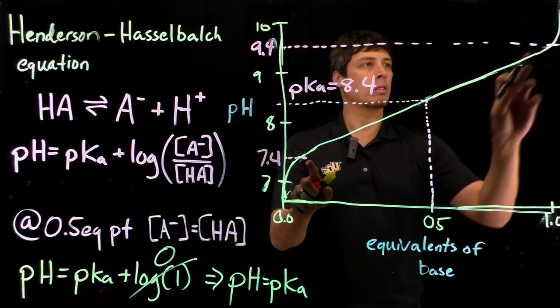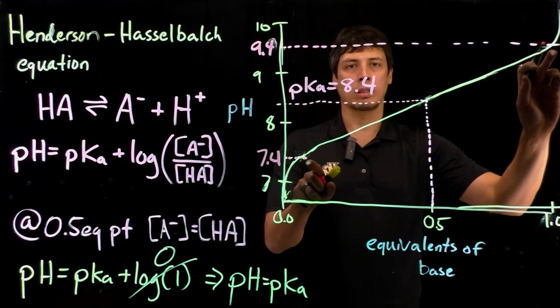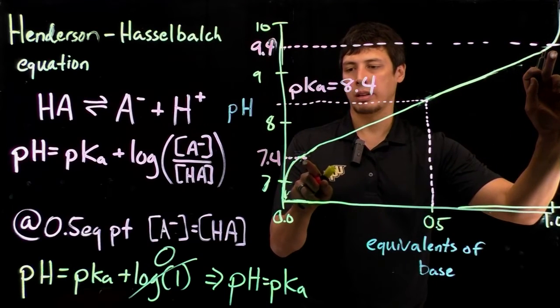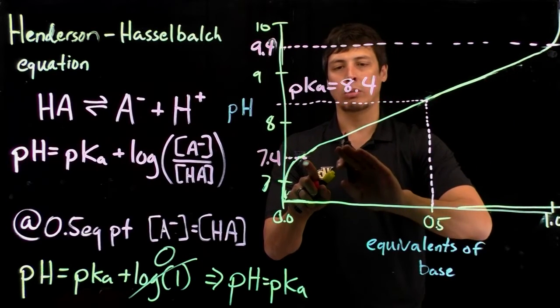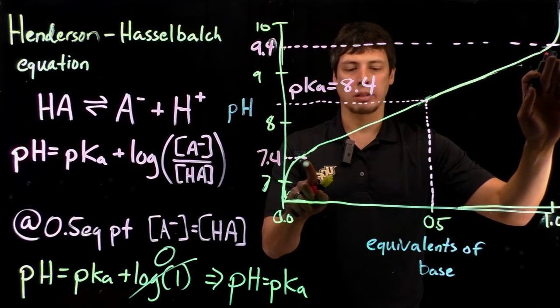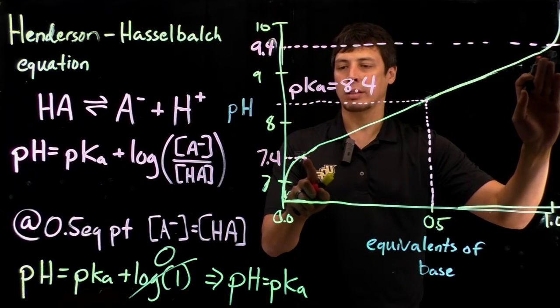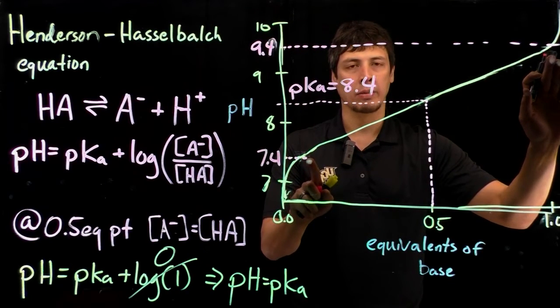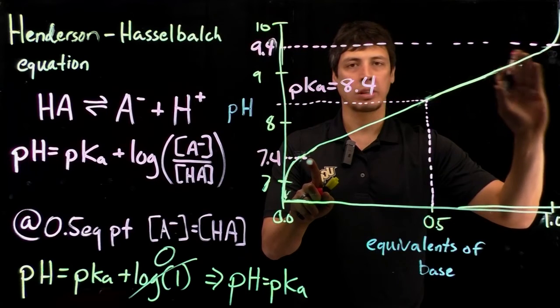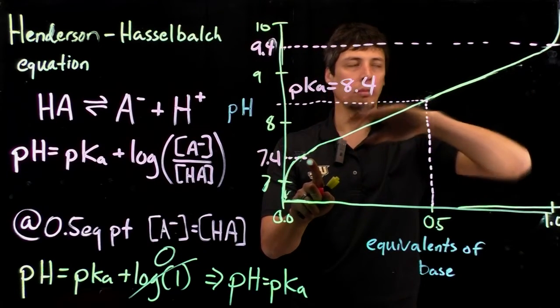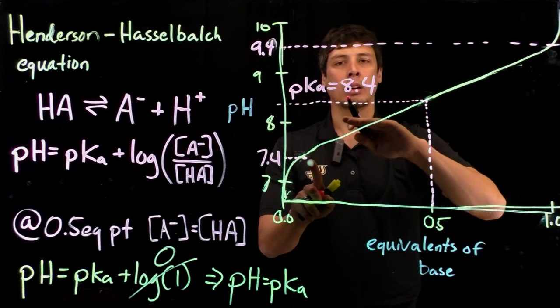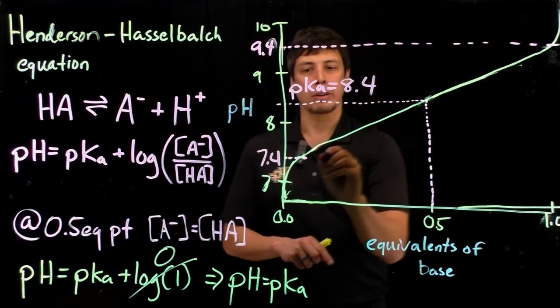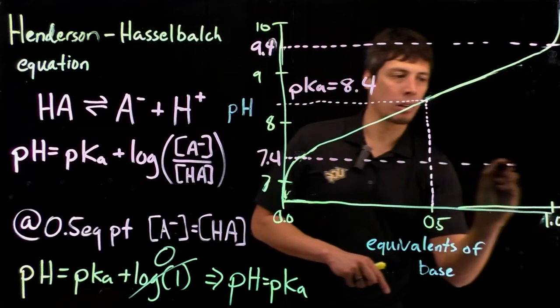Notice how this line doesn't have this asymptotic behavior, but it has a very slow, gradual increase as you increase the amount of base. What that is is that the buffer is resisting changes in the pH around the pKa, around plus or minus 1. This is what we call our buffering range.